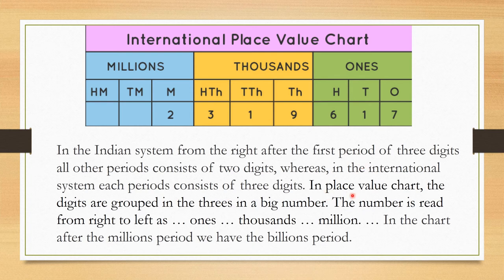In the international place value chart, digits are grouped in threes for large numbers. The number is read from right to left as ones, thousands, and millions. After the millions period, we have the billions period.